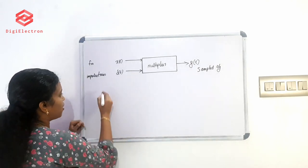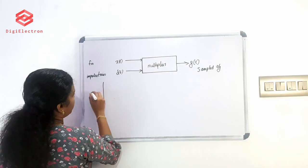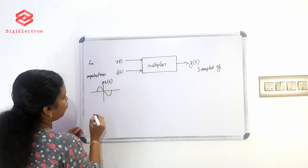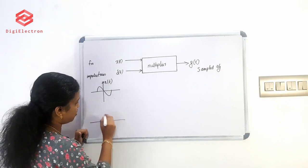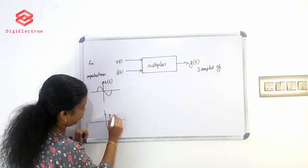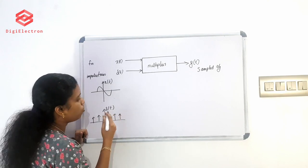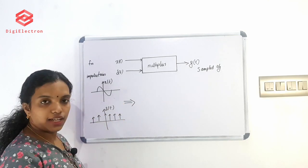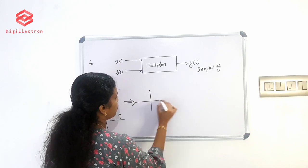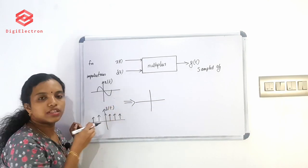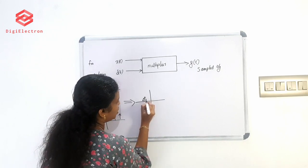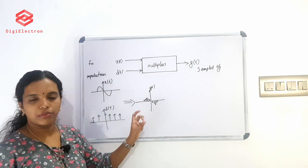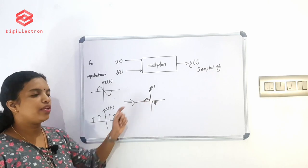Let's look at the figures. What is x(t)? x(t) is the continuous time signal. Del(t) is an impulse train — we represent del(t). The output of a multiplier is a discrete signal. The sampled signal is a discrete signal.